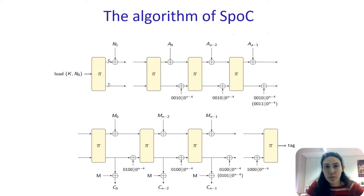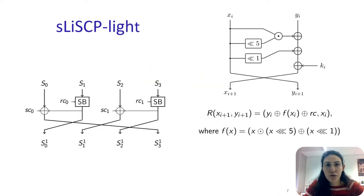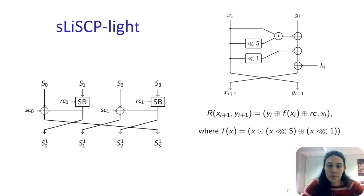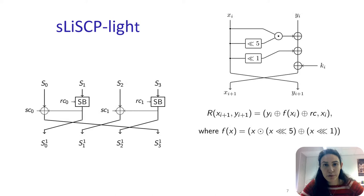The ciphertext is then obtained from the message processing phase by XORing the message and the rate bits. The permutation used in SPOC is the SLI-SEP light permutation. The left figure shows one step of this permutation. First, the state is divided into four equal sub-blocks. Then a S-box layer is applied to half of the state, and the constant is added to the other half of the state. Finally, the sub-blocks are permuted.